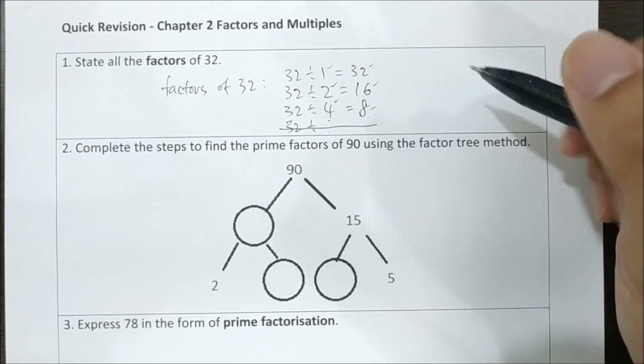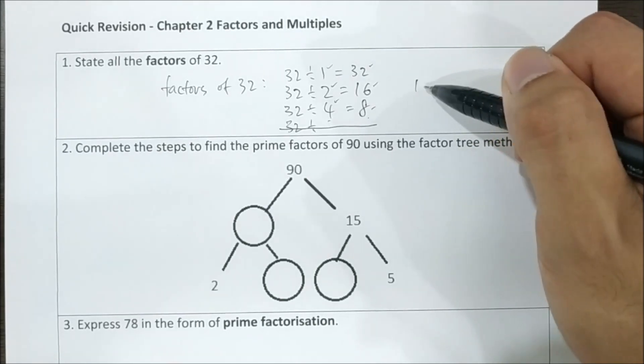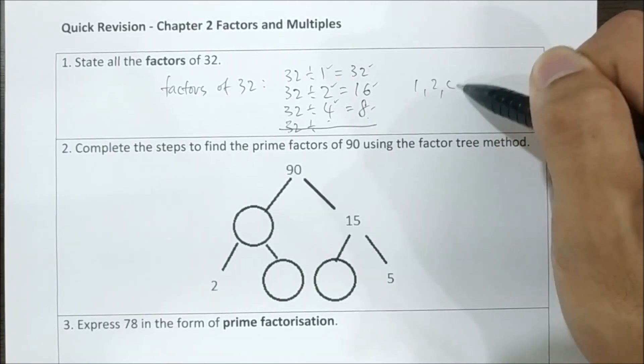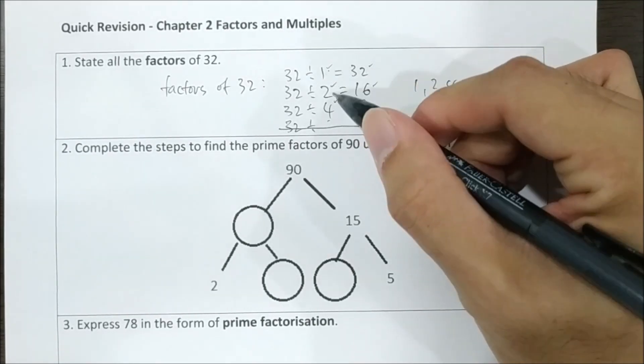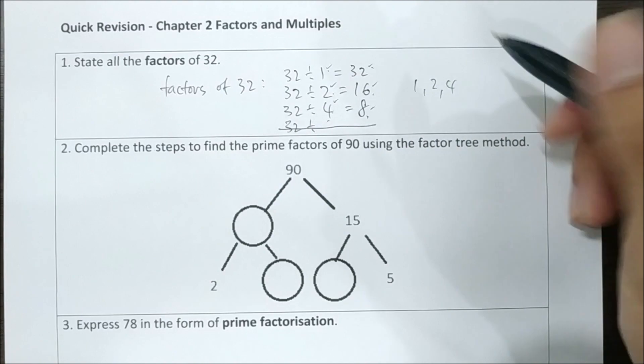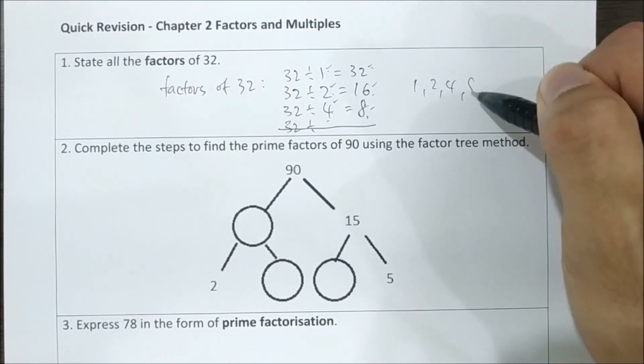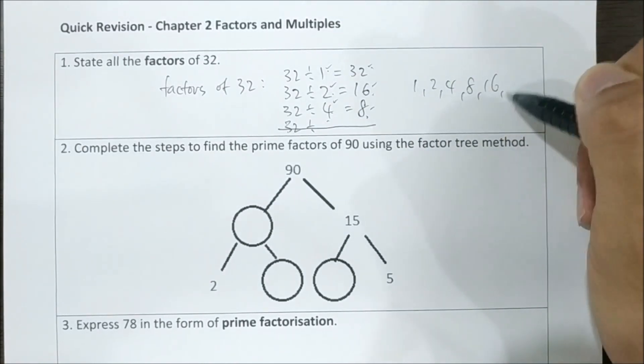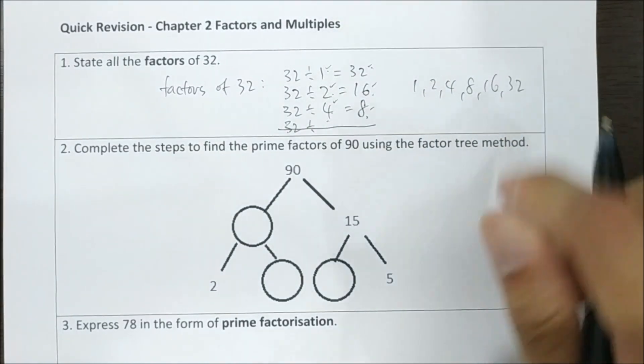So the answer is 1, 2, 4, 8, 16, and 32. Those are all the factors of 32.